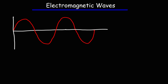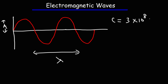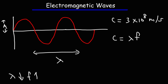Like all waves, electromagnetic waves have amplitude, they have wavelength, and also frequency. Electromagnetic waves propagate at the speed of light, which is 3 times 10 to the 8 meters per second. This speed is equal to the wavelength of the wave times the frequency. So when the wavelength decreases, the frequency of the wave increases.